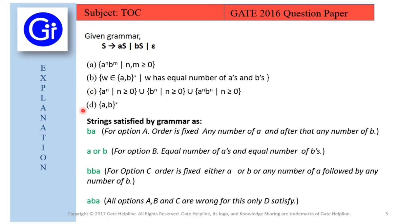Our next string is 'aba', which we can generate from this grammar: S → aS, then S → bS giving 'abS', then S → aS giving 'abaS', then S → ε, giving 'aba'. As we have discussed, all options A, B, and C are wrong. For 'aba', only option D satisfies.